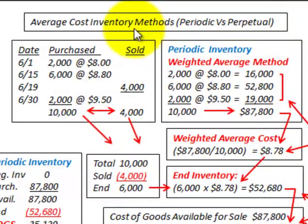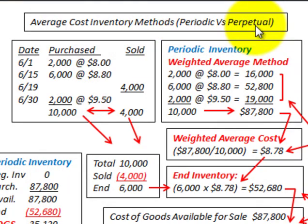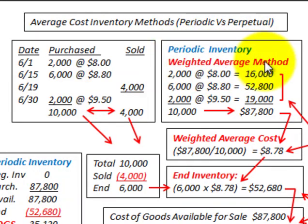Here we're going to be looking at average cost inventory methods, and what we're going to be comparing is the periodic method versus the perpetual method. We'll start with the periodic inventory method, and this is where we use the weighted average method to calculate our average cost of our inventories.